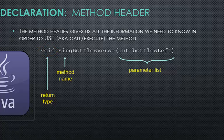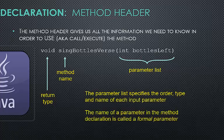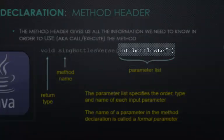A method always has a set of parentheses after its name, which is a visual cue that it is not a variable. Inside the parentheses will be the inputs to the method. These are called parameters. If there are no inputs, hence no parameters, the parens will be left empty. The parameter list specifies the order, type, and name of each input parameter required by the method. The name of a parameter in the method declaration is called a formal parameter.